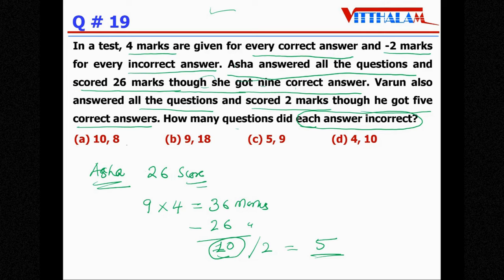And every question there were two marks deducted, therefore she gave five incorrect answers. That is by Asha. And if you see here option 10 so a is not, nine so b is not the answer, here five so c is the answer. Here it is four, so d is not the answer, so only c. No need to check for Varun.